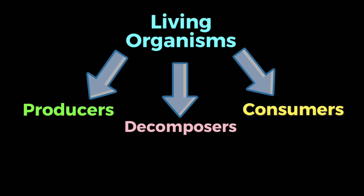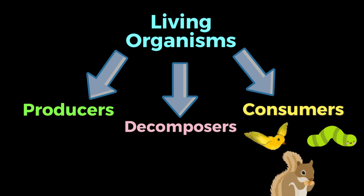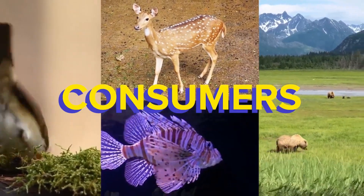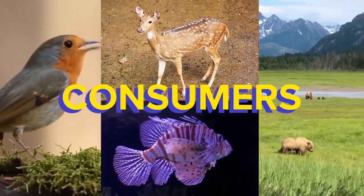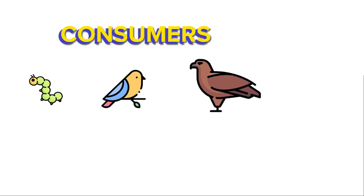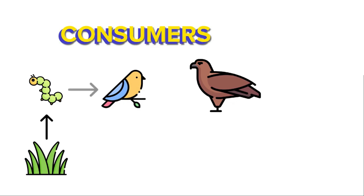Finally, there are the consumers. Consumers are the organisms that need to eat plants or other organisms to survive. Here are three examples of consumers. The caterpillar needs to eat plants, like this grass. Then this bird eats the caterpillar. And then this bird is consumed by an even larger predator, like this hawk.